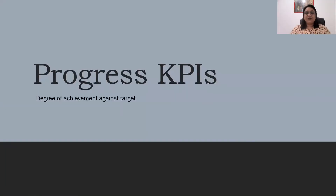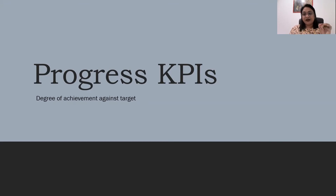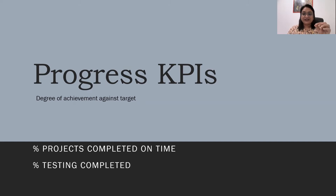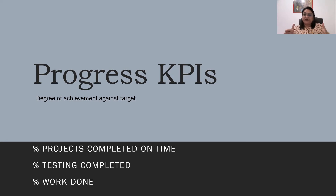The first KPI we are going to discuss is the Progress KPI. Progress KPI measures the degree of achievement against the target. If an organization is a project-based organization, the KPI could be the percentage of projects completed on time, the percentage of testing completed on time, or the percentage of construction completed on time. Essentially, how much progress have we made toward 100% completion?